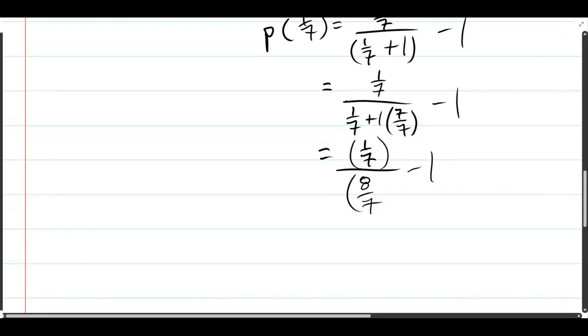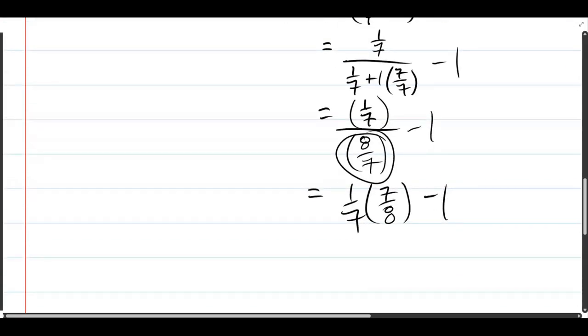We have a multi-story fraction so we're going to multiply by the reciprocal of the denominator which is that 8/7ths. So 1/7th times 7/8ths minus 1. We're about to be in eighths so we'll multiply 1 by 8 over 8.